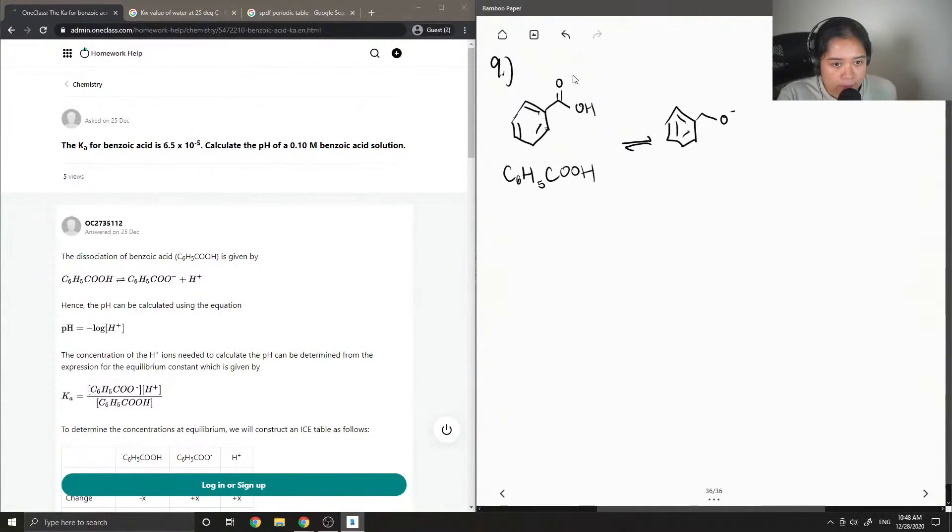And when it dissociates into ions, it is deprotonated. So we get C6H5COO minus plus a proton.